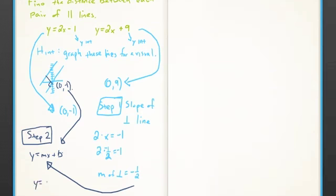So since we chose (0, -1) to be that point, we know -1 is part of that equation, and we already know our slope from step 1. So y = -1/2x - 1. That's our perpendicular line equation.